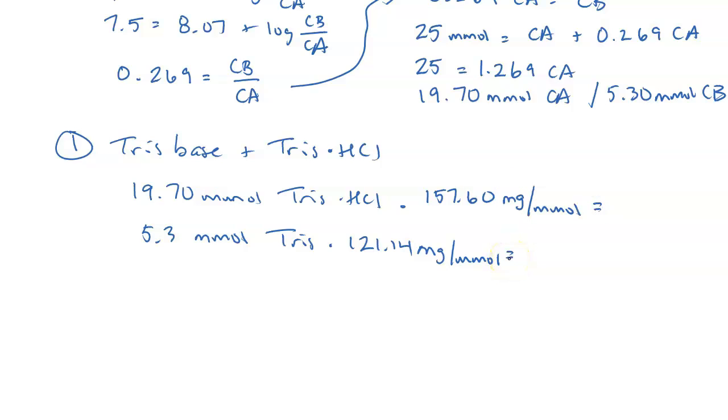So now we do the math here. So I'll get out my calculator. I'm going to do the bottom one first because I already have that in my calculator. 5.3 times 121.14. And that's 642.26 milligrams. Well, I can't possibly weigh something to that many decimal places, but that's the math. I could probably weigh out to the nearest tenth of a milligram. And then for the other one, 19.70 times 157.6. That's 3,105 milligrams, which would be 3.1 grams. And this would be 0.6 grams. So in order to make this one, I would need 3.105 grams of Tris HCl and 0.642 grams of Tris base.